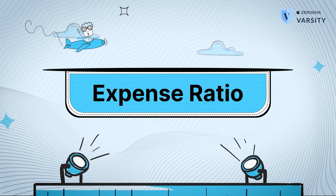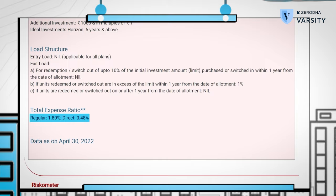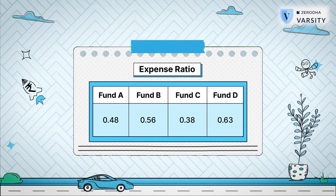The expense ratio for both regular and direct is mentioned here. As you can see, the direct fund is far cheaper than the regular fund, and this shouldn't be surprising at all. Whenever you're checking the expense ratio, always compare the fund's expense ratio with the peer group. If the fund under consideration is very expensive, then you may want to shop around and see if there are better alternatives in the market.